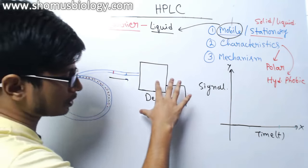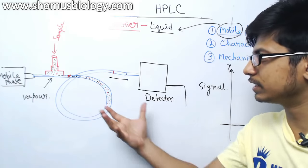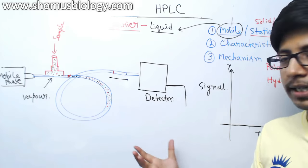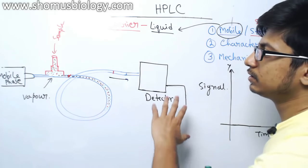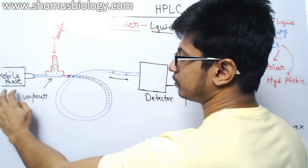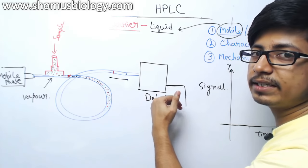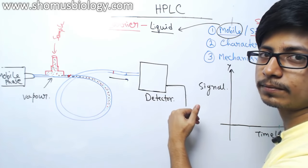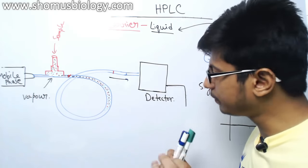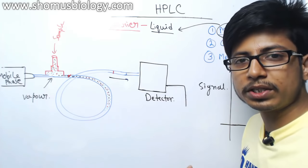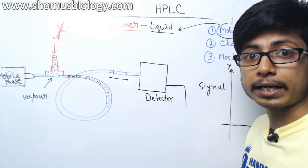Now let us look at the instrumentation process a little bit, and then we go into the exact details of the separation mechanism conducted in the column. This is the complete picture — it starts with the mobile phase and ultimately ends at the detector. The detector is connected to a computer, which uses the data from the detector and puts it in a graph, giving us an idea about what is separating.